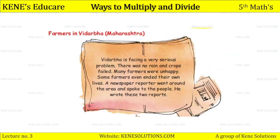Now students, let's look at farmers in Vidarbha, Maharashtra. Vidarbha is facing a very serious problem — there was no rain and crops failed. Many farmers were unhappy; some farmers even ended their own lives. A newspaper reporter went around the area and spoke to the people and wrote two reports.